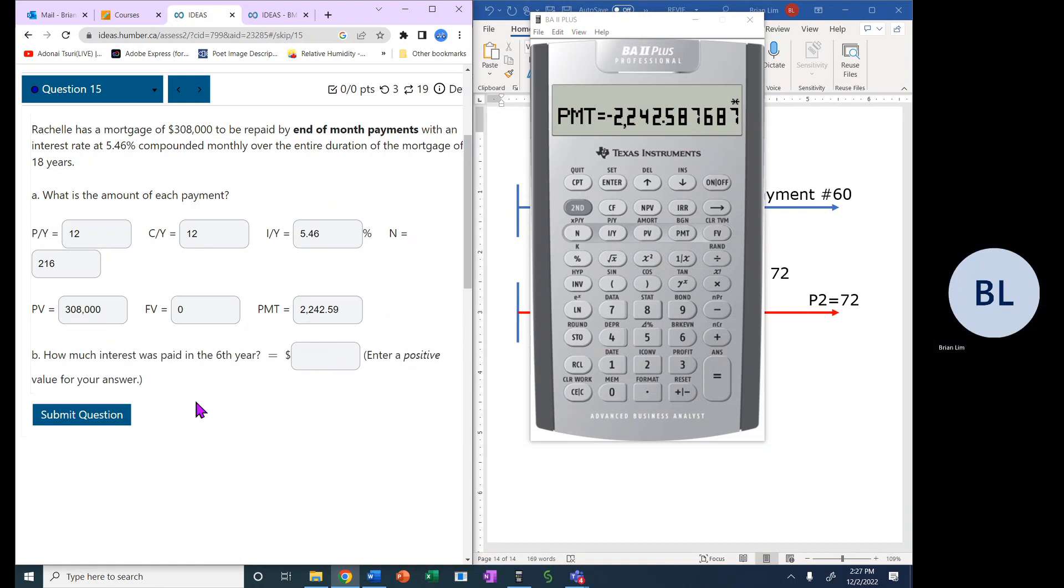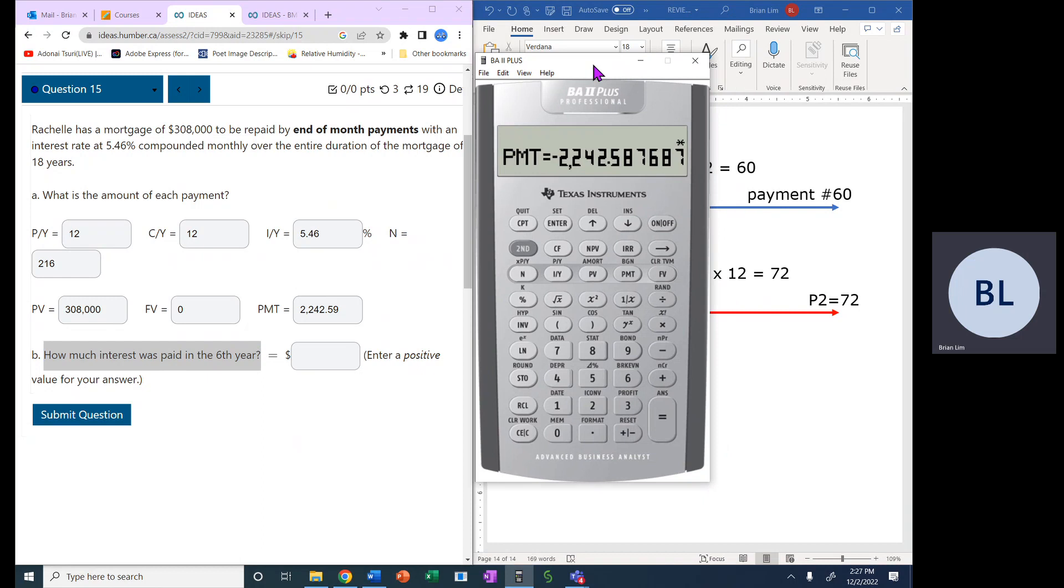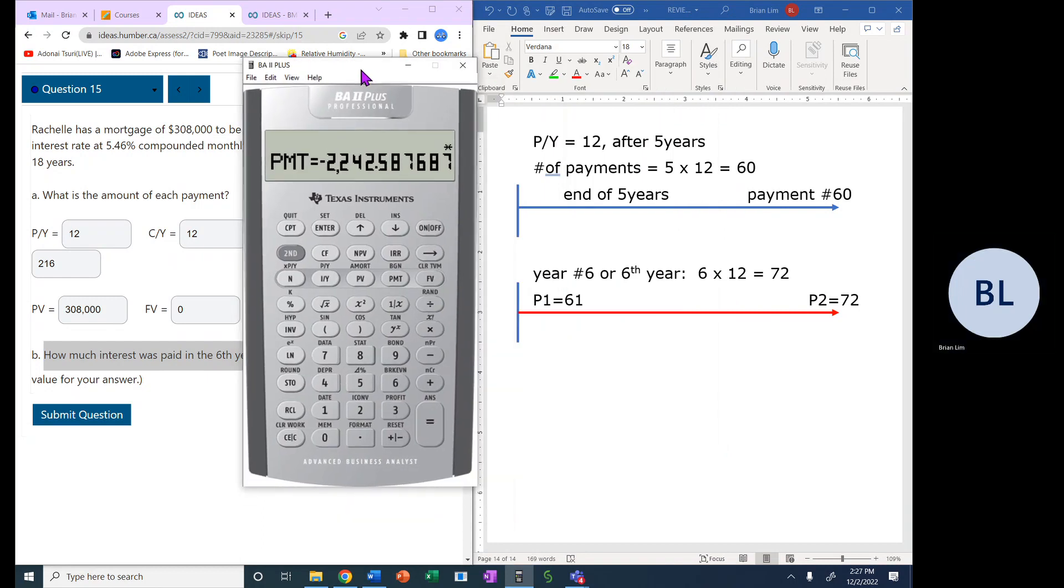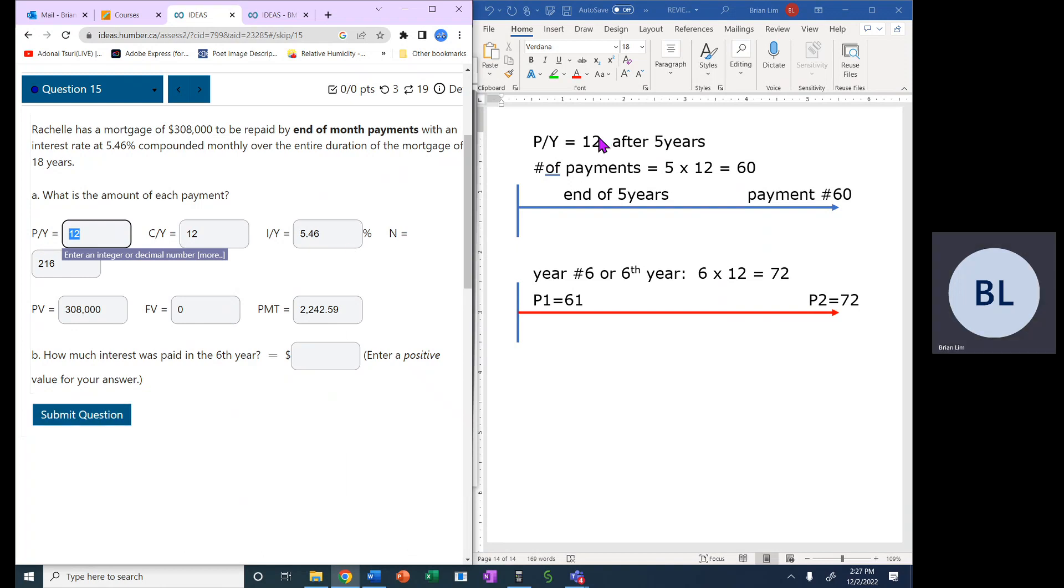All right, now, how much interest was paid in the sixth year? Okay, so let's come over here. The payments are monthly, so 12 times per year. After five years, remember you're looking at the sixth year, so after five years there'll be five times 12, which will be 60 payments made.